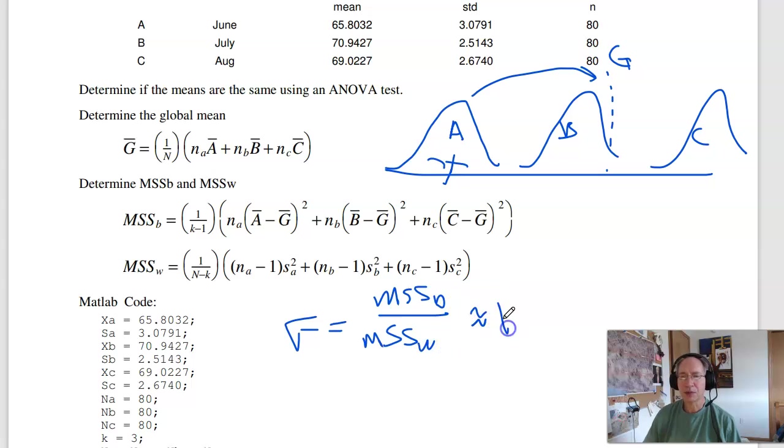If this is roughly one, then all three populations basically line up and there's no significant difference. If it's much bigger than one, that tells you there are actually three distinct populations, or at least one population is distinct from the other two.